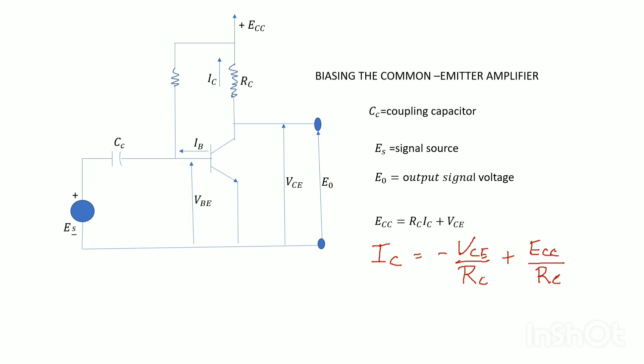A typical common emitter junction transistor amplifier. Here Cc is coupling capacitor which blocks any direct current from the base that may be present in the signal source Es. Output signal voltage E0 is taken across the collector and ground. A simple method of finding the quiescent operating point is by graphical analysis.